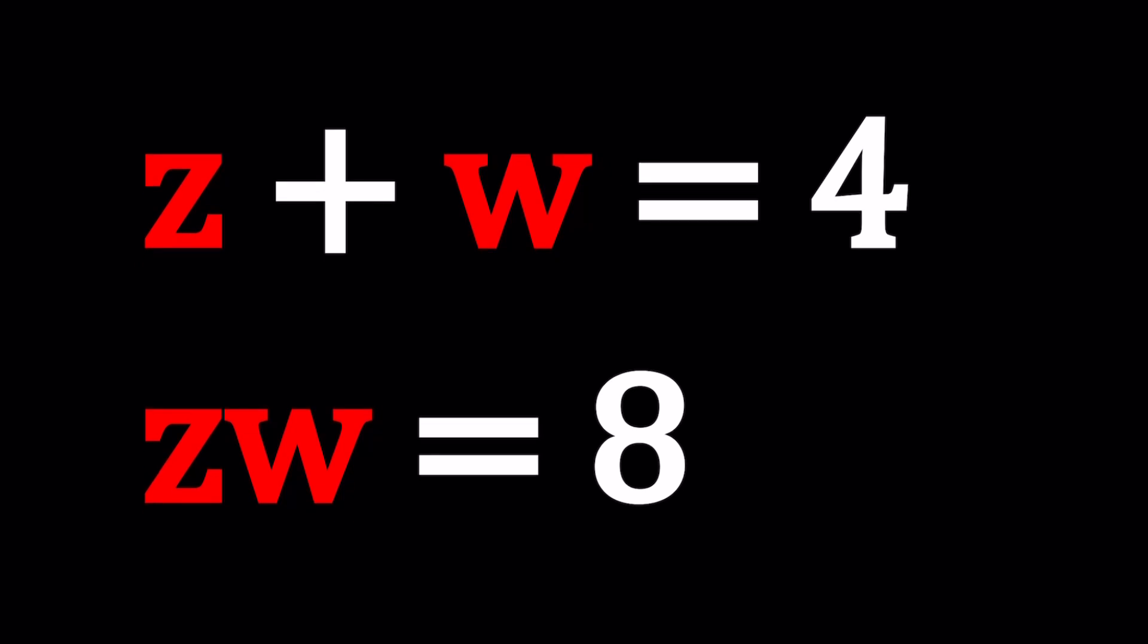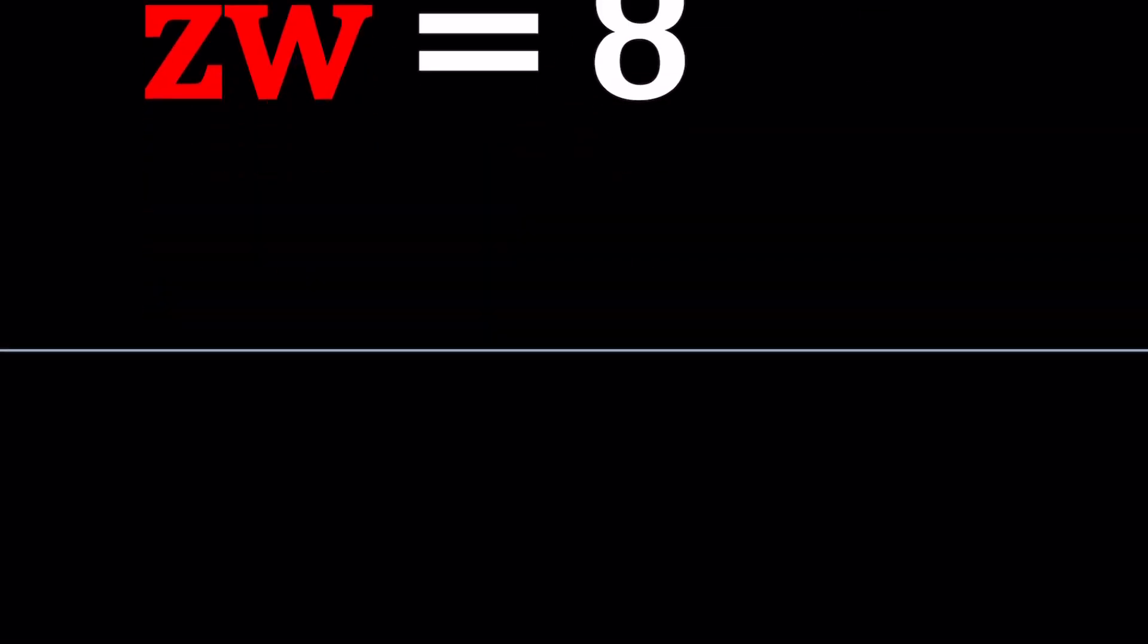And I will be presenting three methods. And there's probably more than three that we can use. So we have z plus w equals 4 and zw equals 8 and we're going to solve for z and w. Let's start with the first method.